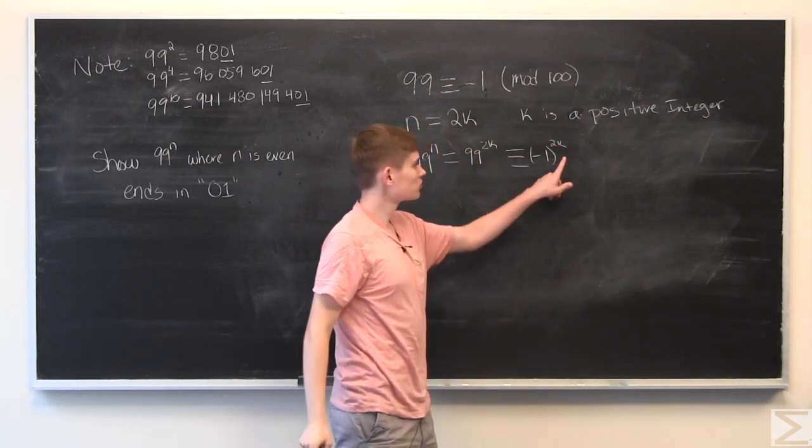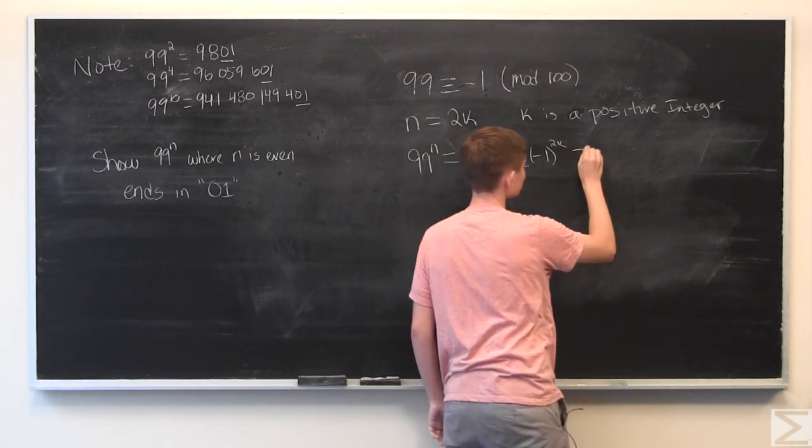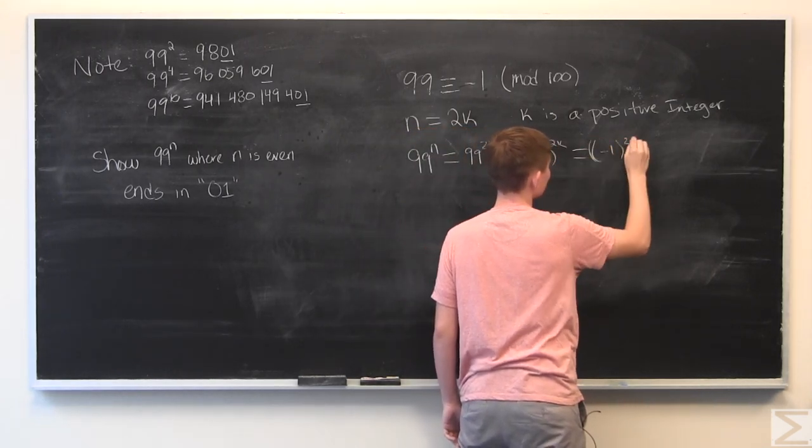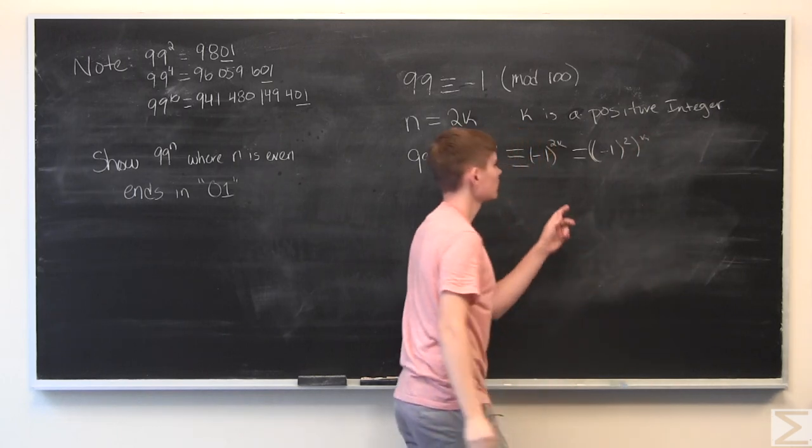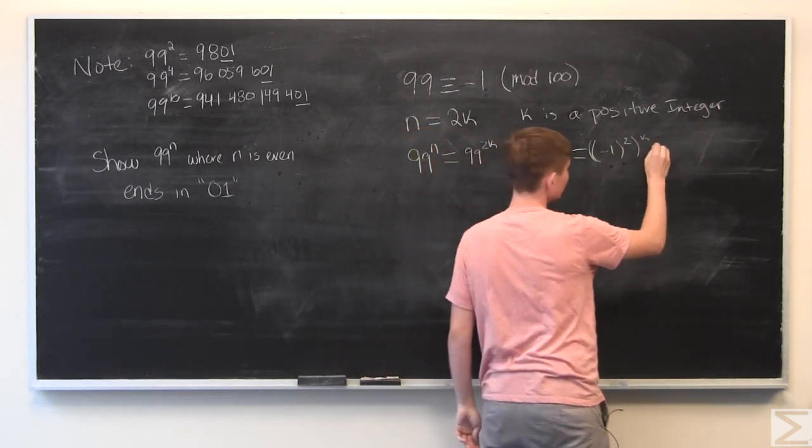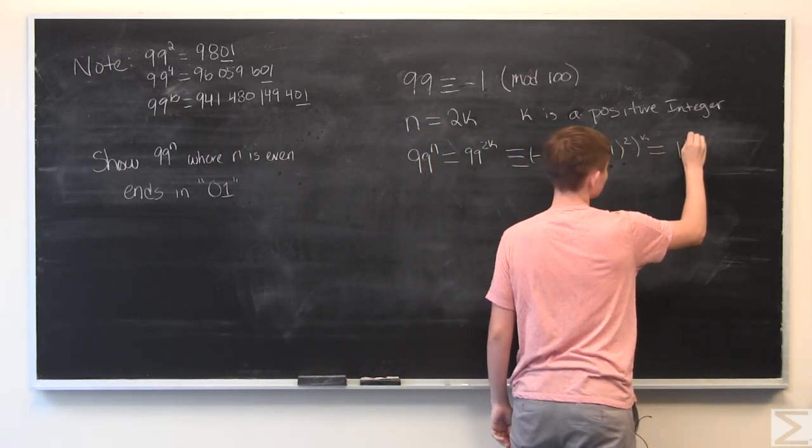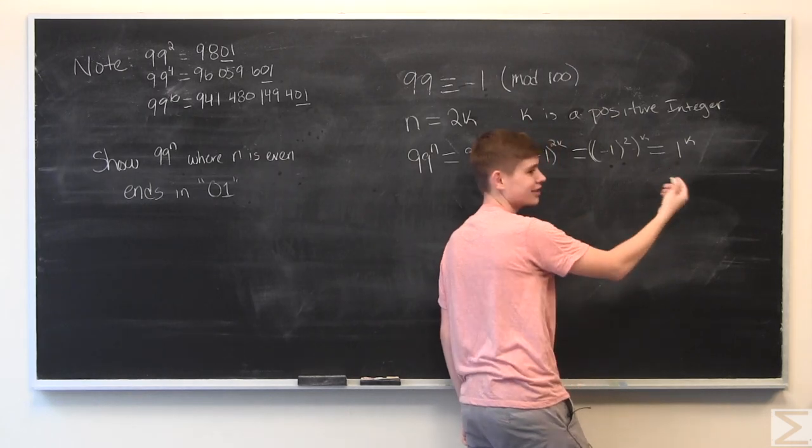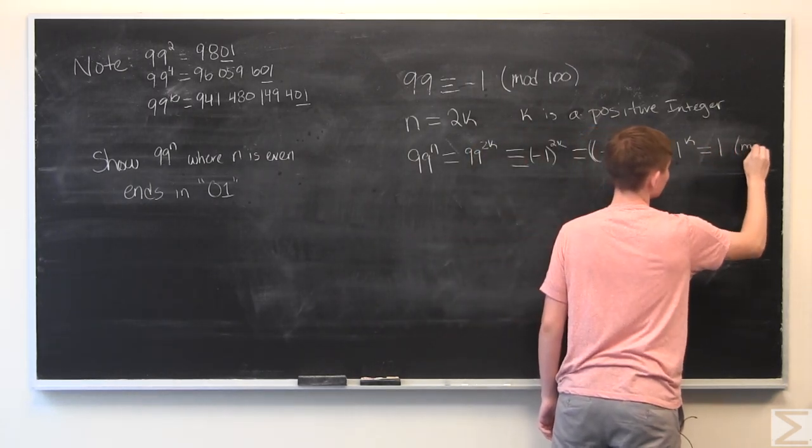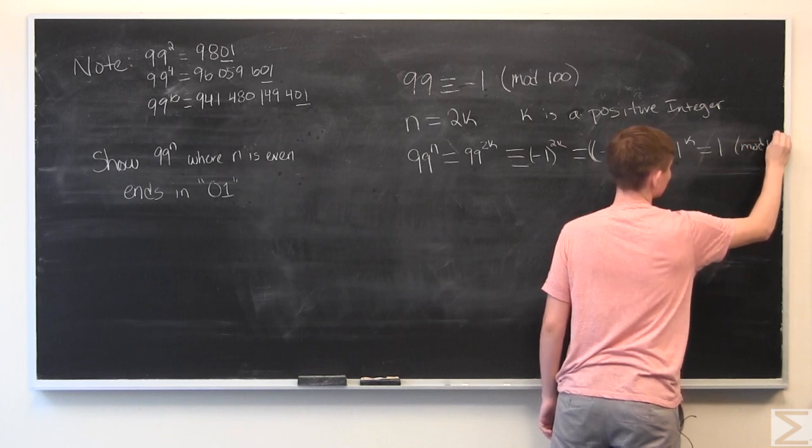And then because of exponent rules we can do this. We can say this is equal to negative 1 squared and then that to the k-th power, which is just 1 to the k-th power and 1 to any power is always equal to 1. And this is mod 100.